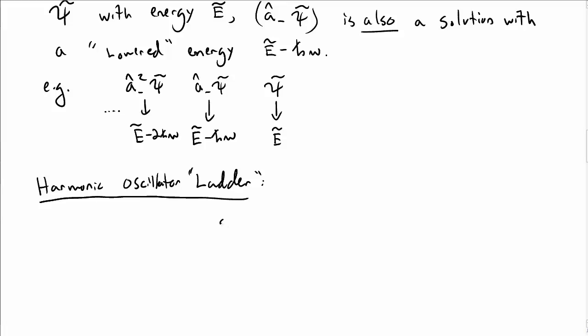This is the harmonic oscillator ladder. So let's start with a solution, ψ twiddle, with energy E twiddle.